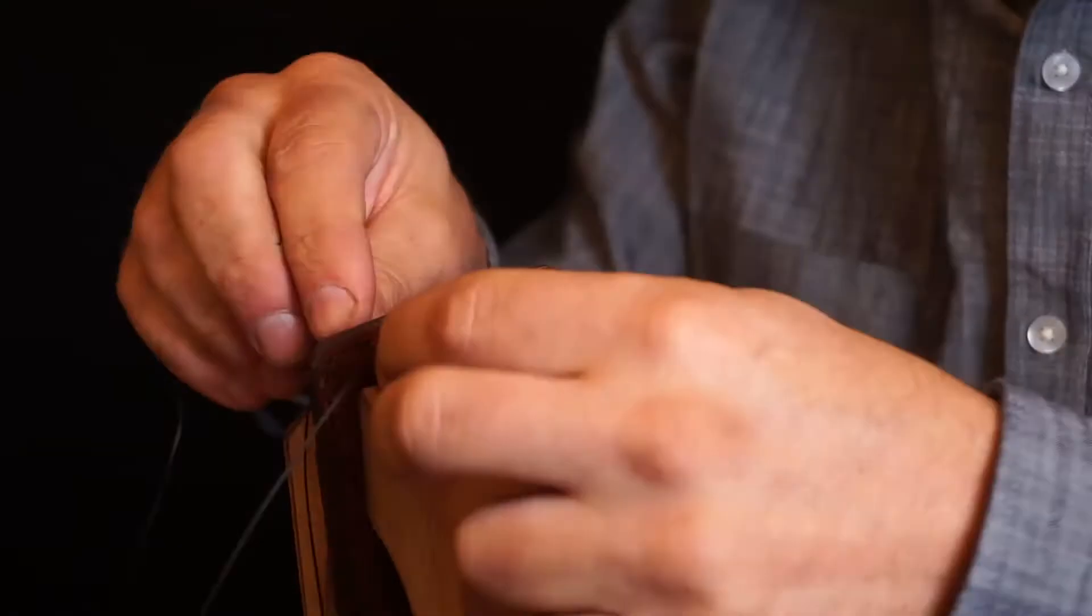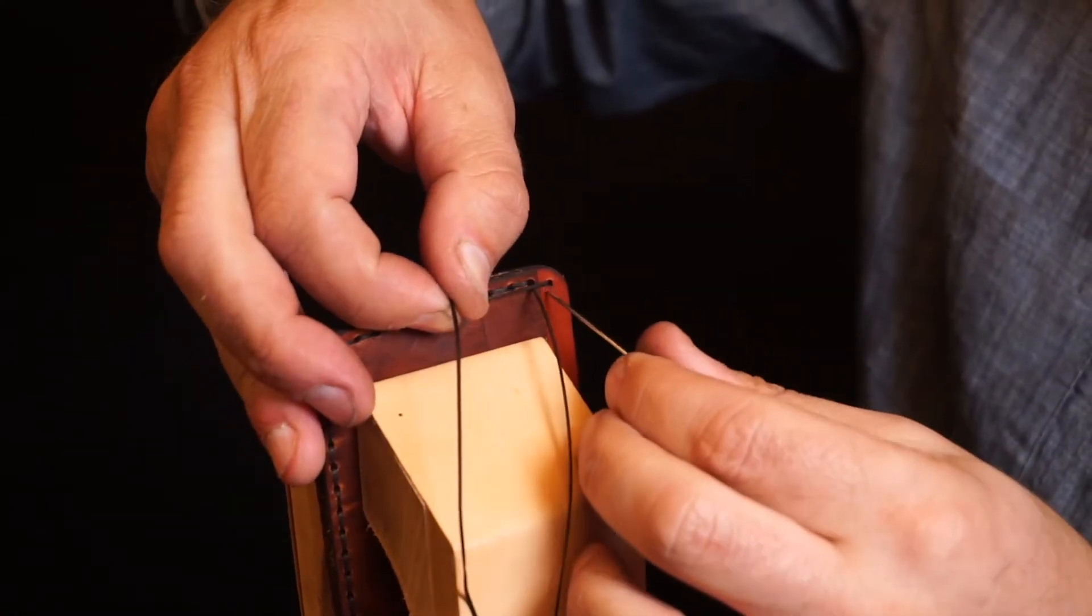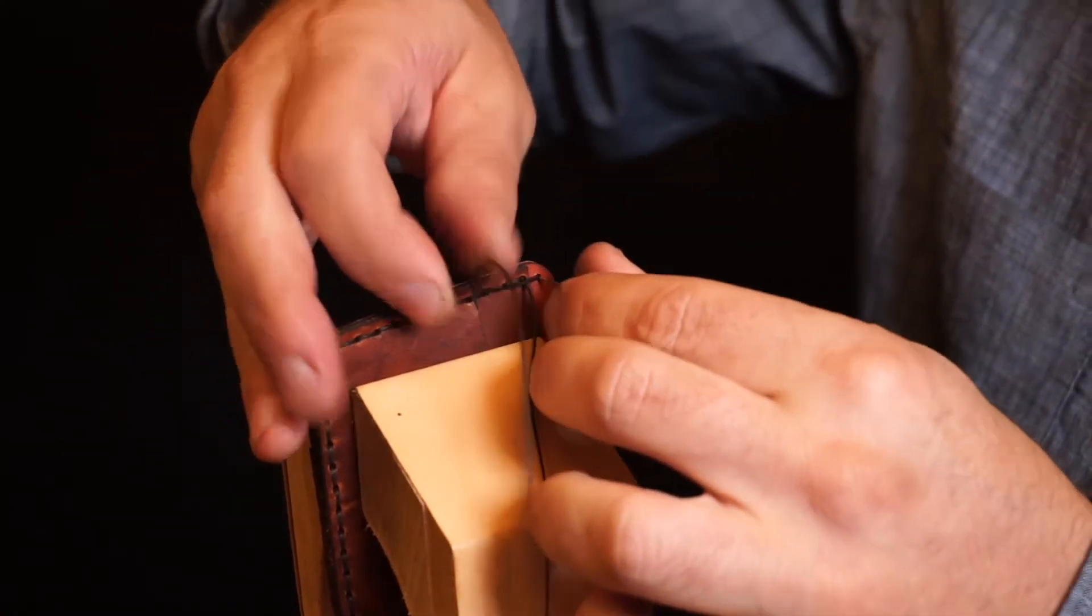Anytime you add or lose layers of leather in a stitch line, pay extra attention to keep the stitches tight. Here we are dropping down from the top card pocket and want to ensure this edge does not lift up while in use.